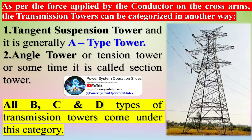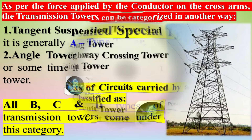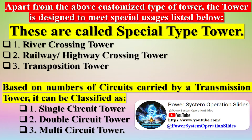As per the force applied by the conductor on the cross arms, transmission towers can be categorized as: tangent suspension towers, generally called A-type towers; and angle towers, or tension towers, sometimes called section towers — B, C, and D types fall under this category. Apart from these, customized towers are designed for special uses like river crossing towers, railway/highway crossing towers, and transposition towers.